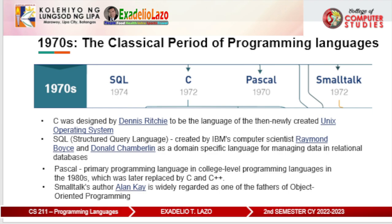Pascal seems to be a foreshadow of the C language family. It was actually the primary programming language taught at the college level in the 1980s, and was later replaced by C and C++. Among the languages of this era, Smalltalk is niche by comparison. However, it brought valuable innovations to the programming community — notably the concept of a graphical programming interface and the paradigm of object-oriented programming. Smalltalk's author Alan Kay is widely regarded as one of the fathers of object-oriented programming. It also revived dynamic typing from LISP, which acted as inspiration for modern dynamic languages.